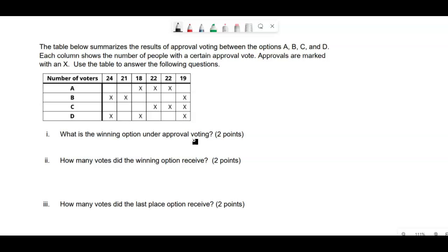Okay, so basically we need to work out how many votes, how many approvals did each one get. So A got 18 plus 22 plus 22. B got 24 plus 21 plus 19 approval votes. C got 22 plus 22 plus 19.